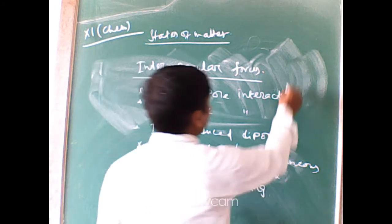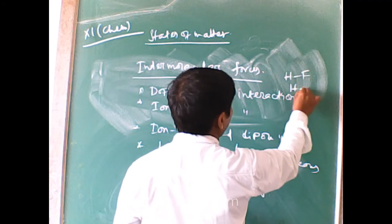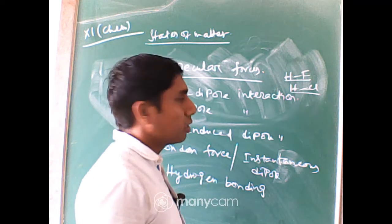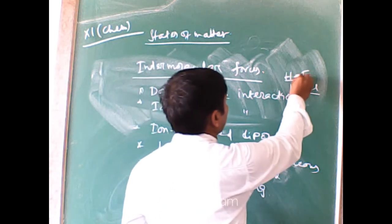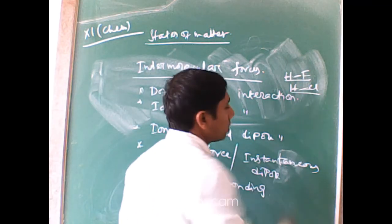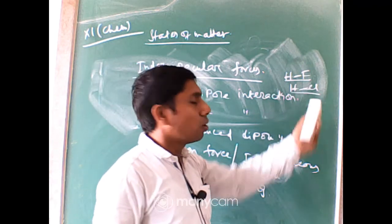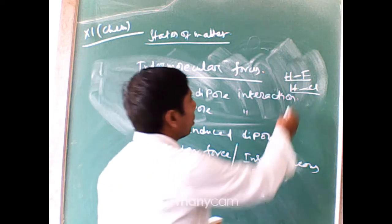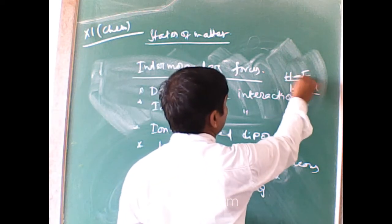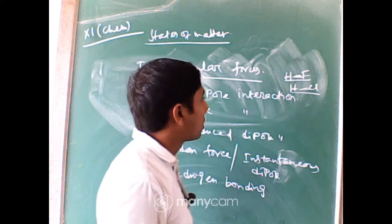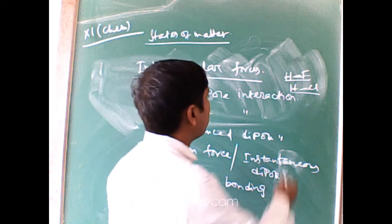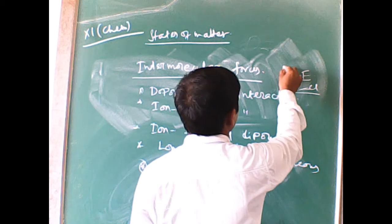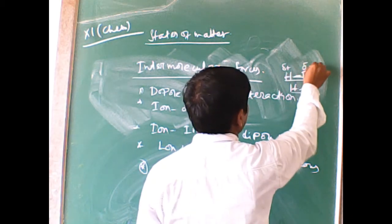For example, in HF and HCl, there is a difference in electronegativity between the constituent atoms. When atoms with different electronegativities bond, the bonding electron pair is attracted towards the more electronegative element, generating two poles in the molecule, symbolized as δ+ and δ−.